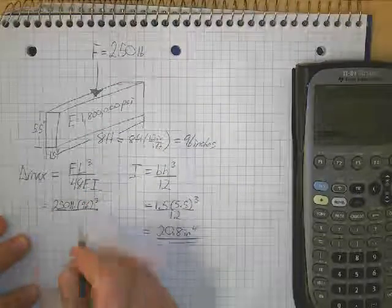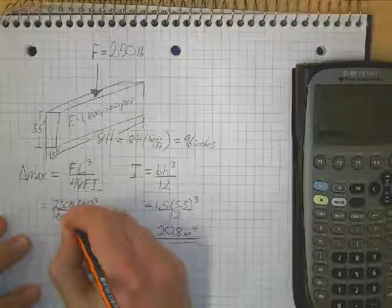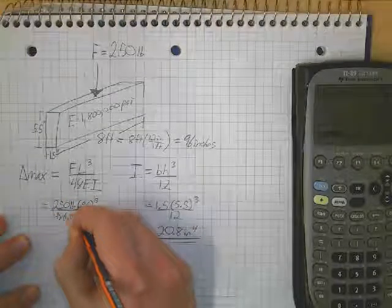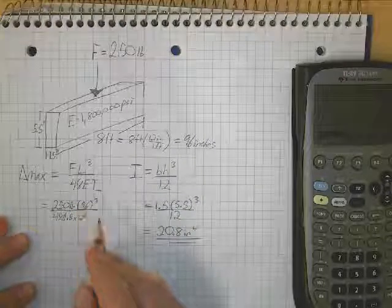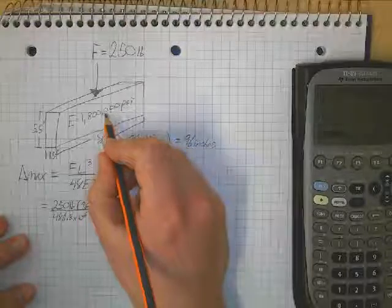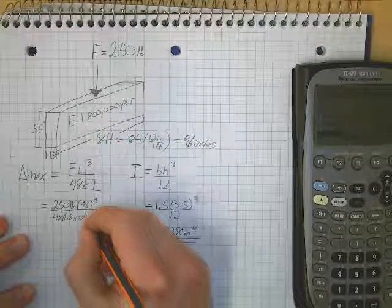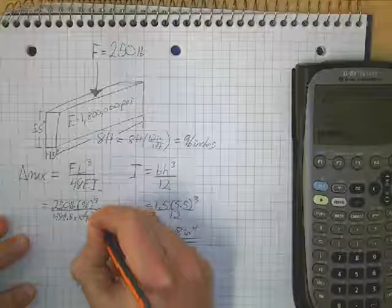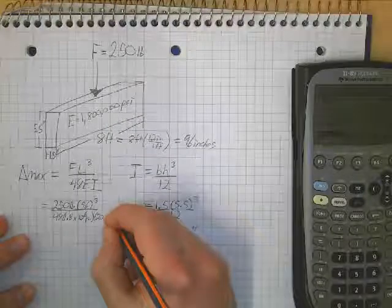Divided by 48 times 1.8 times 10 to the sixth. I'm going to do scientific notation there, rather than writing everything out. Remember, 1, 2, 3, 4, 5, 6. So that's 1.8 times 10 to the sixth psi, times 20.8 inches to the fourth.